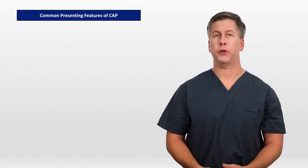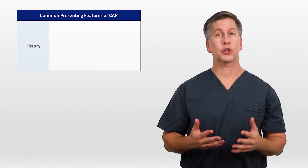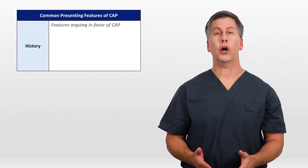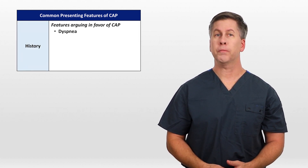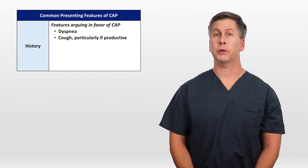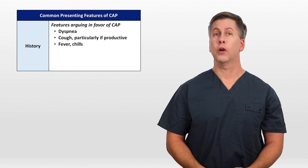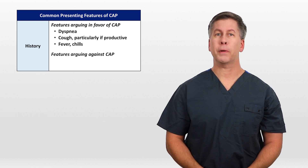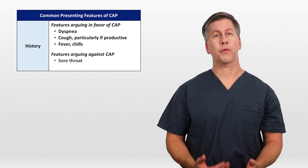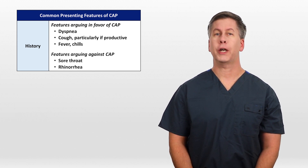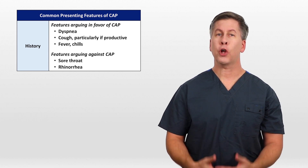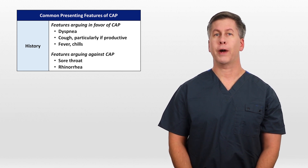Let's run through the common presenting features of Community Acquired Pneumonia. Historical features that argue in favor of CAP include dyspnea, cough, particularly if it's productive, fever, and chills, while features that argue against CAP include a sore throat and rhinorrhea, both of which are associated with upper rather than lower respiratory tract infections.